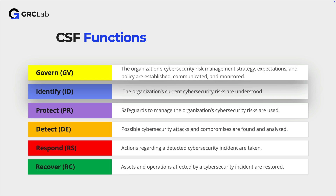Let's explore the six functions in brief detail. The Govern function involves setting up the rules and policies for cybersecurity. It's about deciding how we manage cybersecurity risks and making sure everyone understands their role in keeping our information safe. In the Identify function we focus on understanding what needs to be protected. This means identifying all the information, systems and assets that are important and could be targeted by cyber threats.